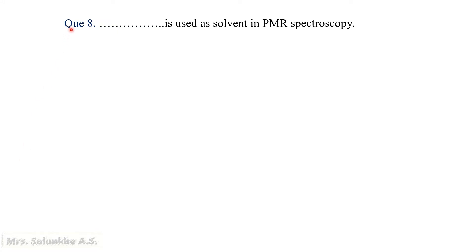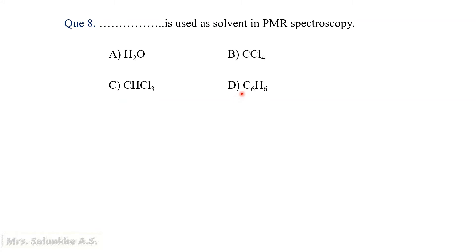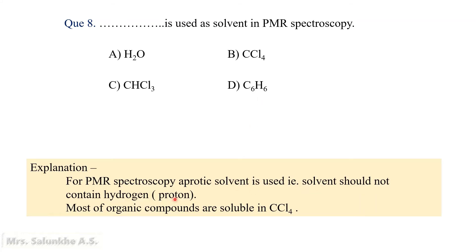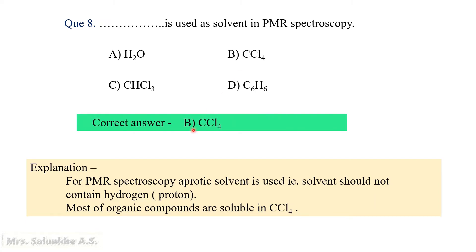Question 8: Dash-dash is used as solvent in PMR spectroscopy. Options: water, carbon tetrachloride, chloroform, and benzene. PMR spectroscopy deals with the study of nuclei of hydrogen atoms, i.e., protons. Thus, the solvent used should be proton-free, meaning it should not contain hydrogen atoms. Therefore, the correct answer is B, carbon tetrachloride.